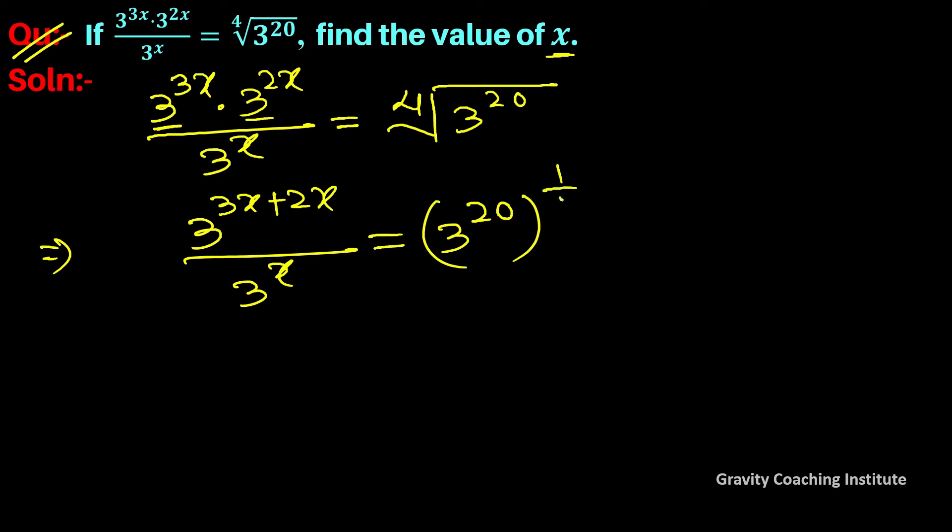This implies that 3 to the power 5x upon 3 to the power x equals, when the power multiplies, 3 to the power 5.